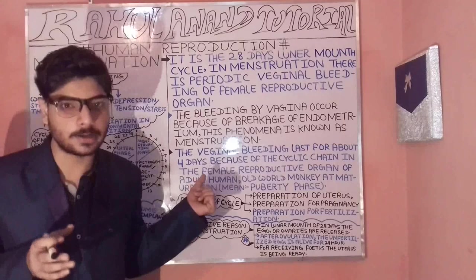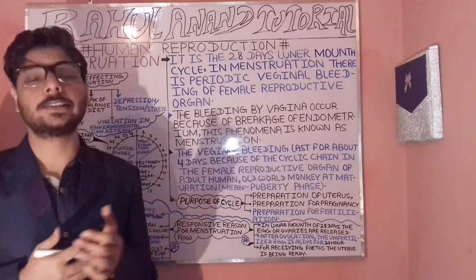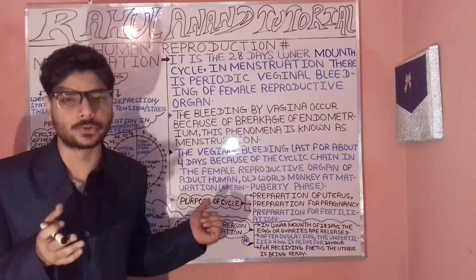The third phase is the luteal phase, also known as the progesterone phase. It initiates from day 14 and continues to day 28. The duration of this phase is around 14 to 15 days.